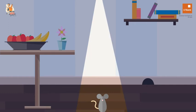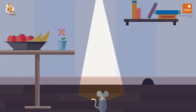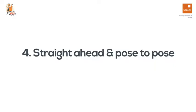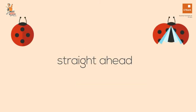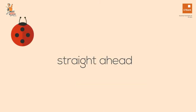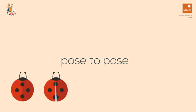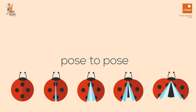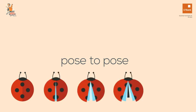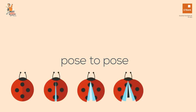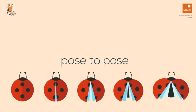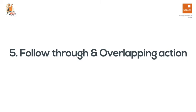Number three: staging. This is the presentation of an idea so that it is completely and unmistakably clear, and directs the viewer's attention to what's important. Number four: straight ahead and pose to pose. These are the two main approaches to animation. Straight ahead action works straight ahead from the first drawing to the last, while pose to pose relies on the animator planning the action and figuring out what drawings need to be in between.